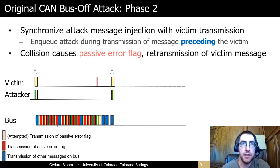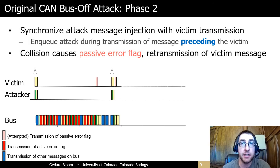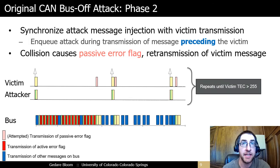The second phase of the bus-off attack consists of repeated injections of the attack message every time the victim transmits. Because the victim is in the error-passive state, these transmissions cause the victim to transmit a passive error flag that gets overwritten by the successful transmission of the attack message. Then the victim successfully retransmits. Each injection causes the victim's TEC to increase by 7 and the attacker's TEC to decrease by 1. The attack eventually succeeds when the victim's TEC exceeds 255 and it enters the bus-off state.